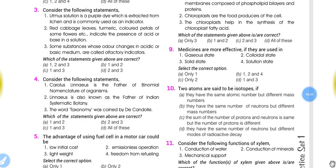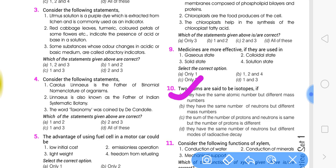Question number 10: Two atoms are said to be isotopes if. The correct answer to this question is option A: they have the same atomic number but different mass numbers. These are known as isotopes.